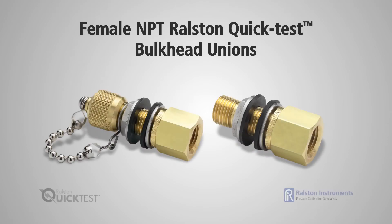NPT Female Ralston Quick Test bulkhead adapters have a working pressure up to 5000 psi or 345 bar and are available with or without cap and chain. Models are available in both brass and stainless steel, so if you have a chemical compatibility issue such as sour gas, then use our stainless steel adapters.